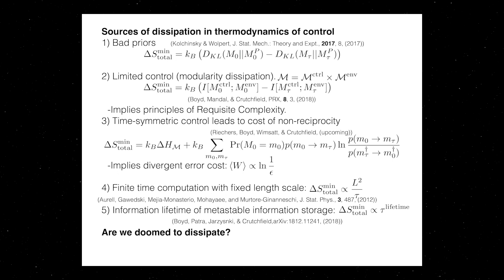And in the limit of low error, you find that the work scales as log of one over the error, which is divergent and much higher than the energy cost.